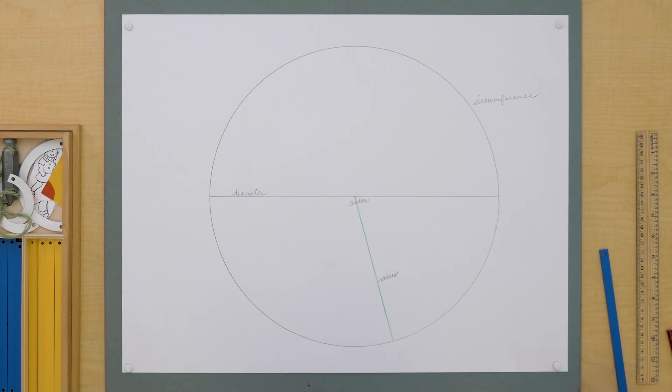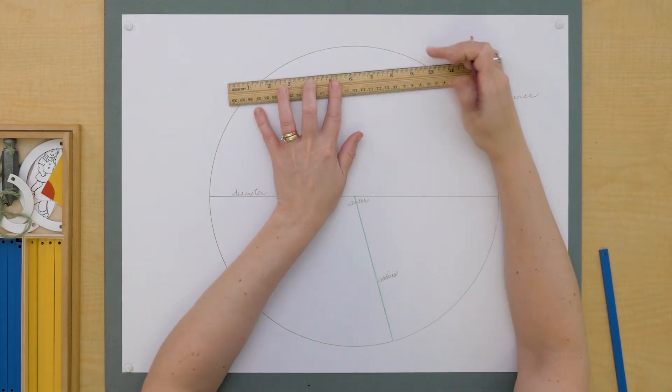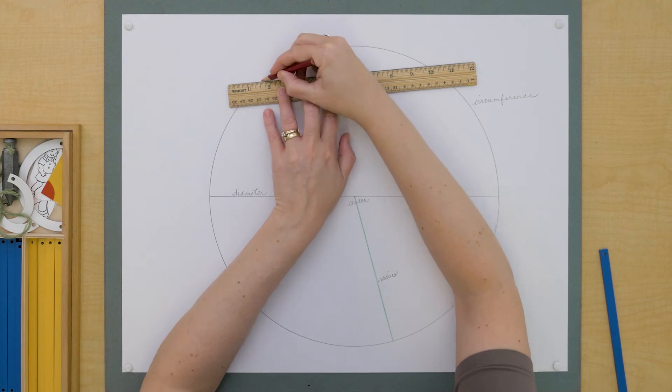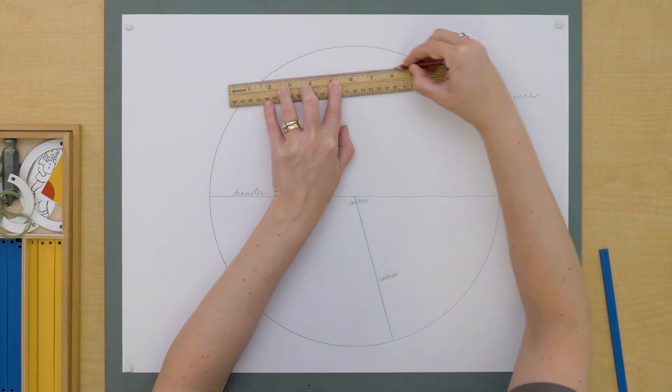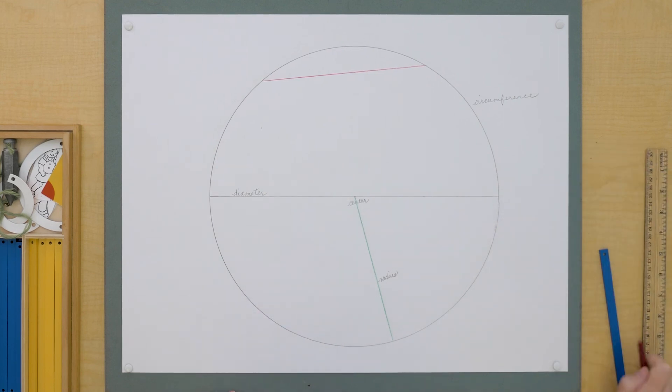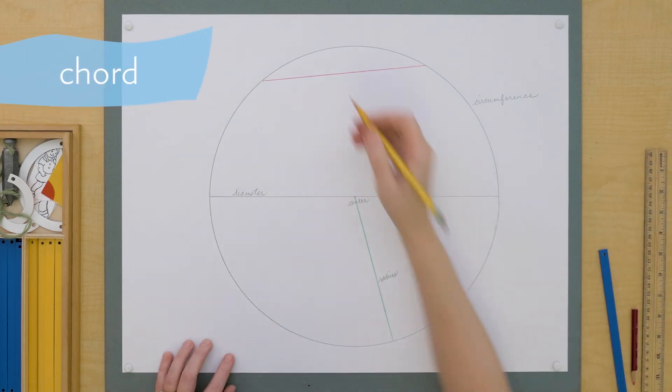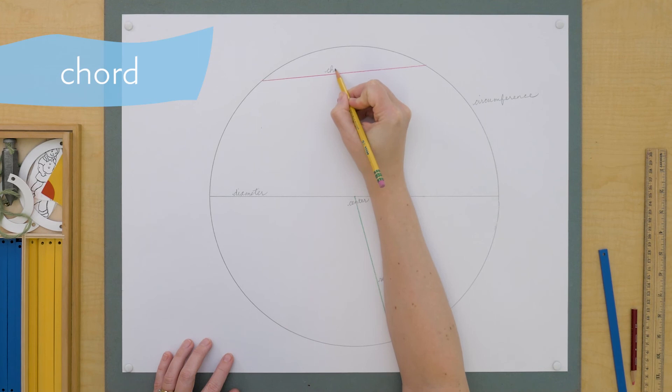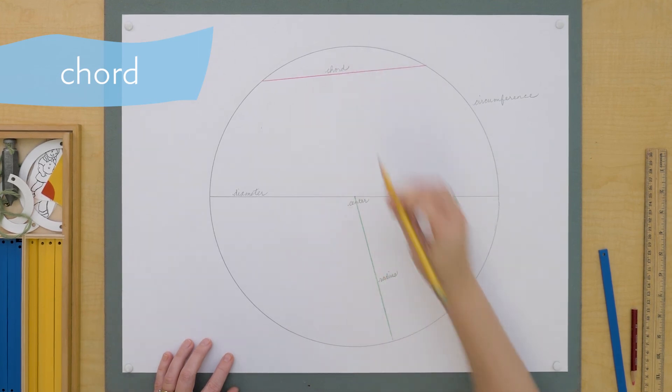But if I have a line segment whose endpoints are on the circumference but doesn't pass through the center, it's called a chord. This is a chord.